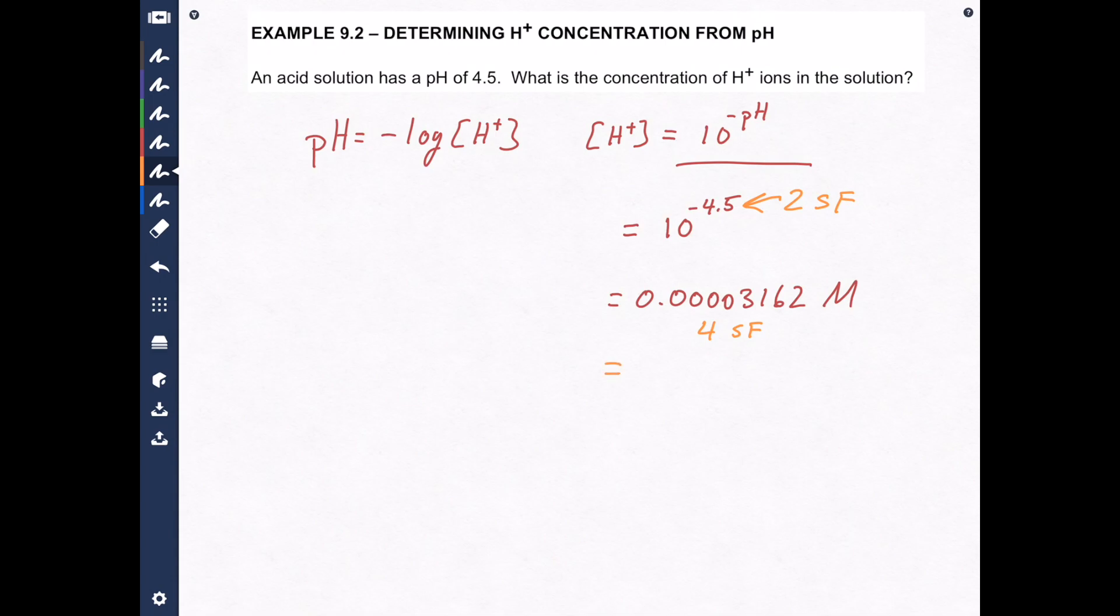The answer will be 0.000032 molar. Because this one was rounded by the six. Now you can leave it like that. There's nothing wrong with that answer. But I prefer scientific notation. It's just a little bit neater to look at. So that's going to be 3.2 times 10 to the negative 5 molar.